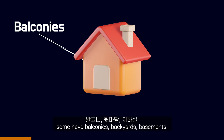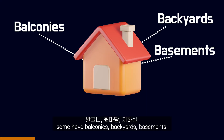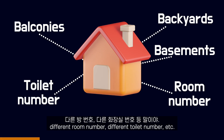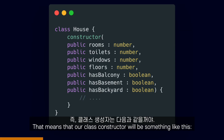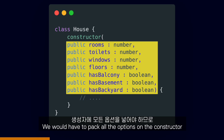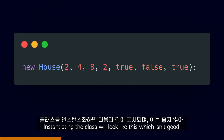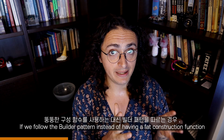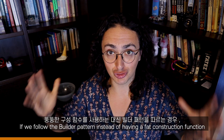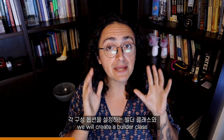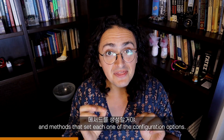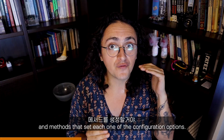Houses can have so many different configurations. Some have balconies, backyards, basements, different room numbers, different toilet numbers, etc. That means that our class constructor will be something like this. We would have to pack all the options on the constructor, which is going to look worse the more properties we have. Instantiating the class will look like this, which isn't good.